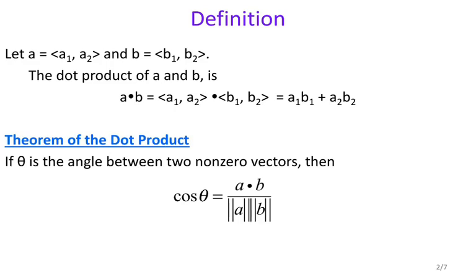So the formula for the dot product is, you have two vectors. Vector A is A1 and A2, vector B is B1 and B2. And if I want to take the dot product of the two, what that means is I'm going to look at the corresponding components. So I'm going to take A1 and that is going to be multiplied by B1, and A2 is going to be multiplied by B2. So A1B1 plus A2B2 and that's going to result in a regular number.